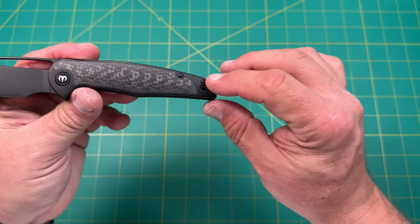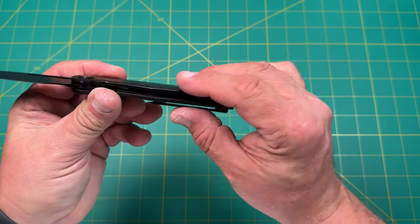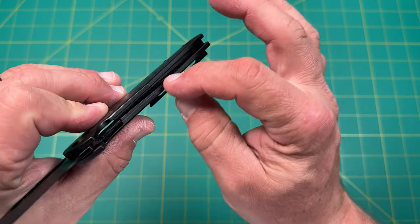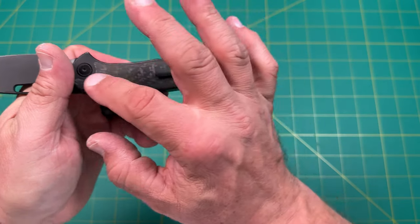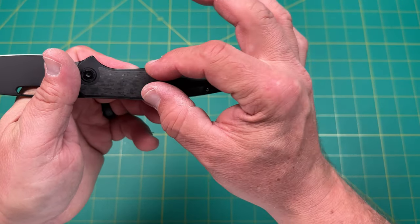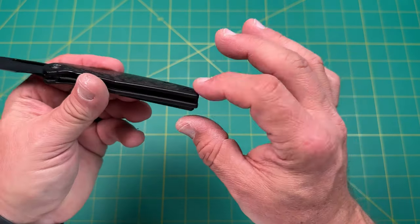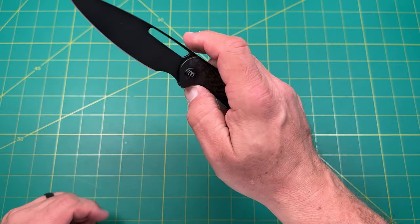So the materials are great. S90V blade steel, carbon fiber inlay, titanium body. And if you can see in there, there's not a whole lot of milling going on in there, but that's okay because this is inlaid with carbon fiber. That's where the milling is occurring and where the weight reduction is occurring.